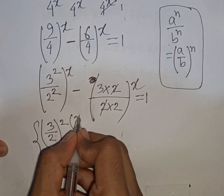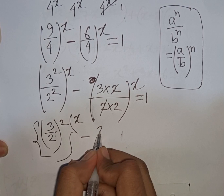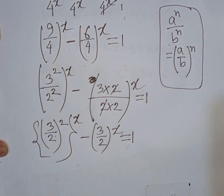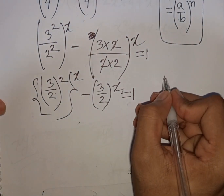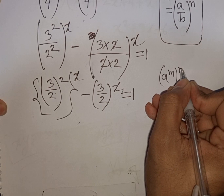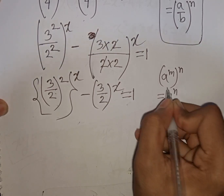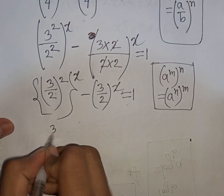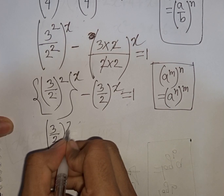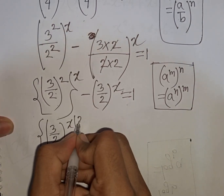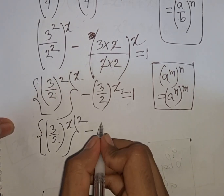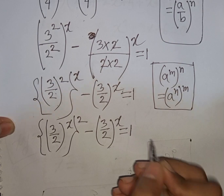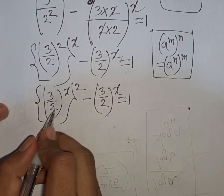We get (3 over 2) to the power (x minus 6) in the first bracket, and (3 over 2) to the power x in the second bracket, which is equal to 1. Applying the rule that a power m bracket power n equals a power mn, we rewrite as (3 over 2) to the power x, all squared, minus (3 over 2) to the power x, equal to 1.